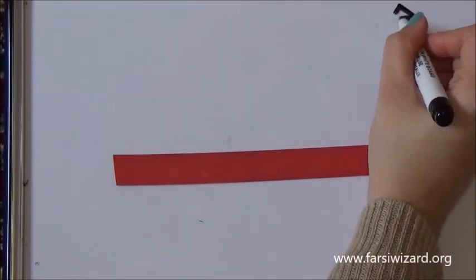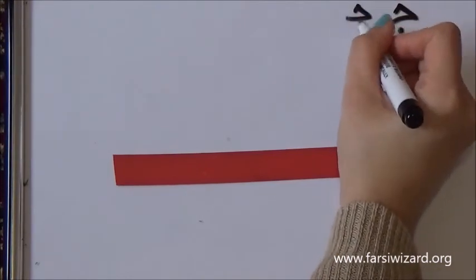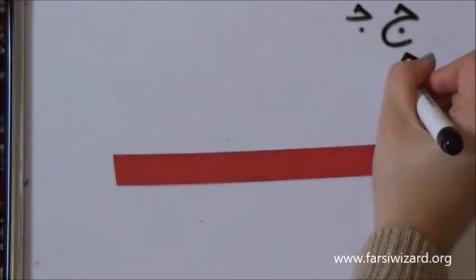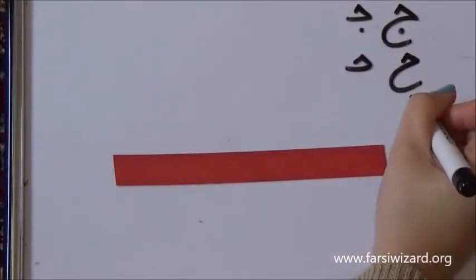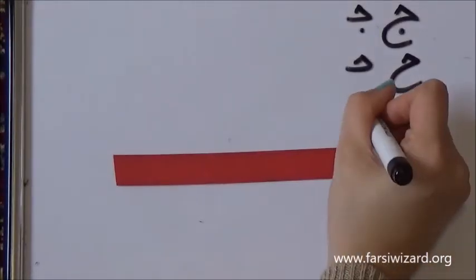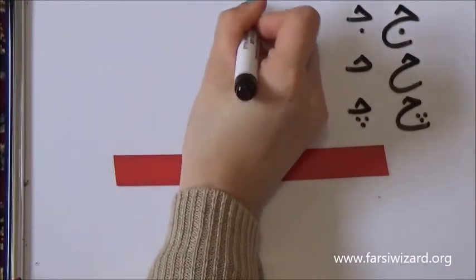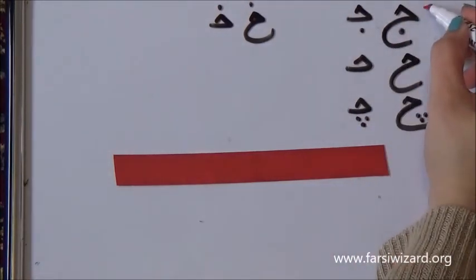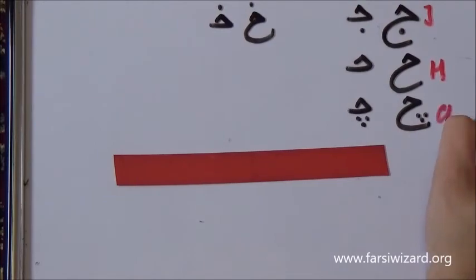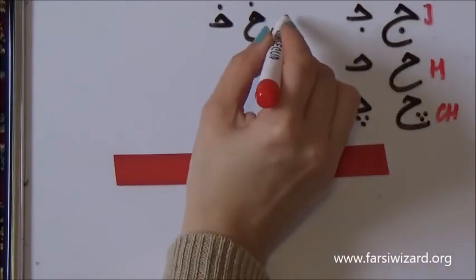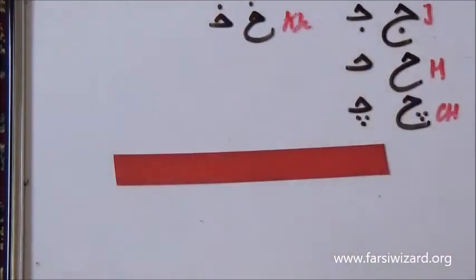Now, let's do a quick review. We have this letter, Jim. The sound was J, like the J in English. Then we had H, like H in English, H the sound. Then we have the letter CHE with three dots, CH in English. And we have KHE, which doesn't exist in English. Jim, H, CHE, KHE. Remember, Jim as J, H as H, CHE as CH, and KHE as KH or X.